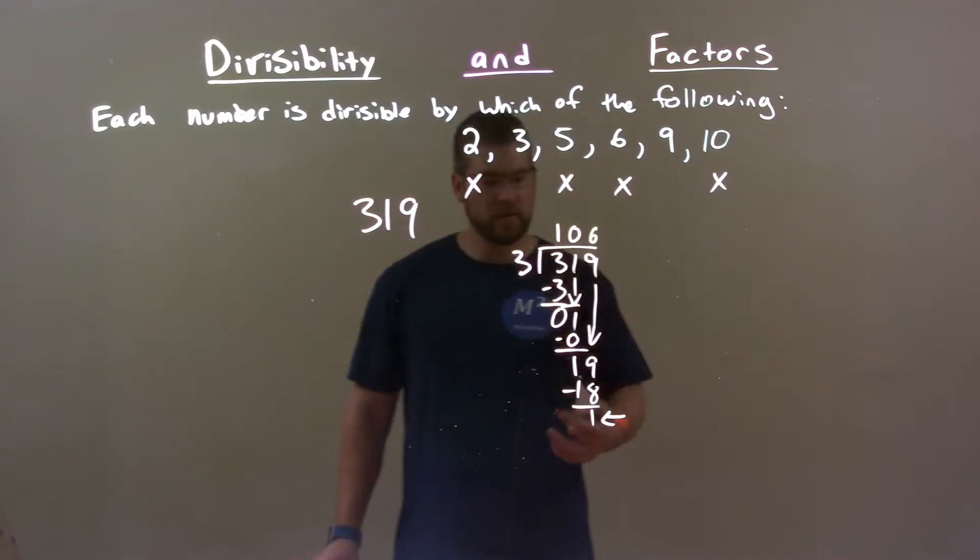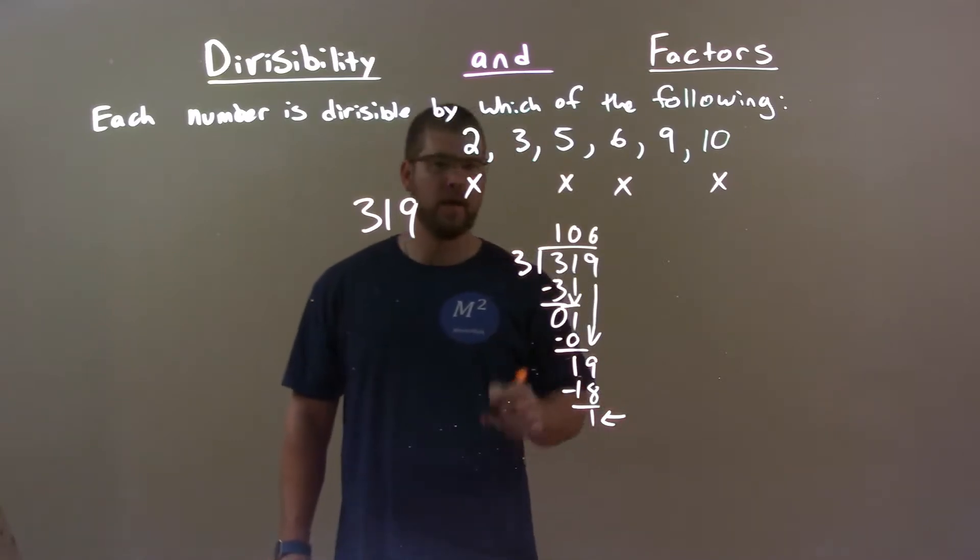Since we have a remainder, remainder of 1 right there, 3 does not go in evenly to 319. So, we have an X there for 3.